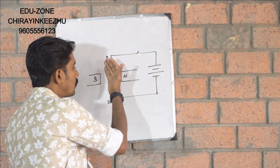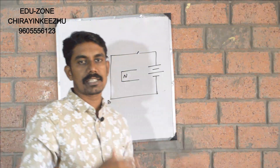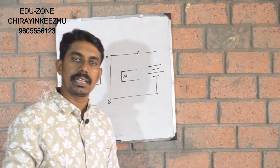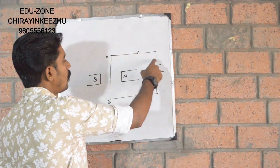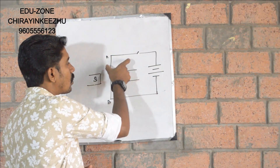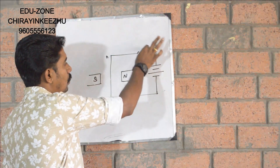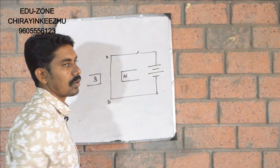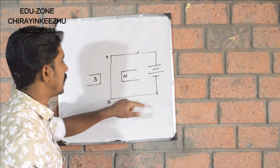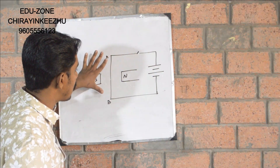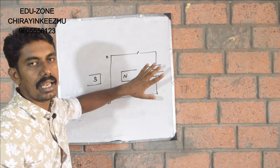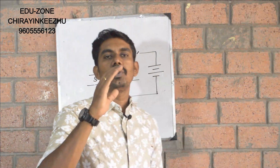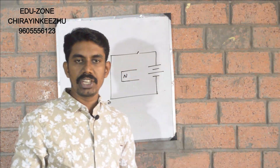If we have to determine the direction of the conductor's motion, we have to determine the direction of the motion. If we have a magnetic field, it's like a current carrying conductor. A magnetic field will act on a current carrying conductor. There will be a current flowing in the magnetic field; the conductor will undergo force and also move.